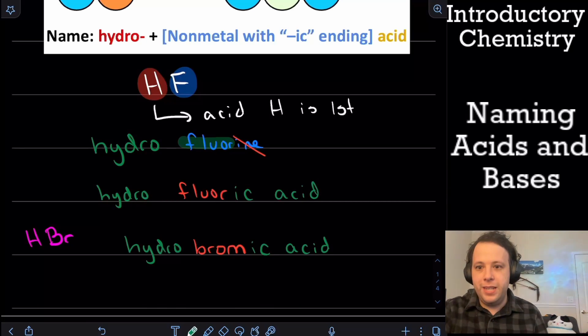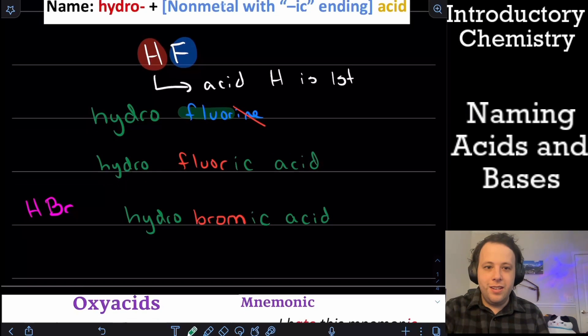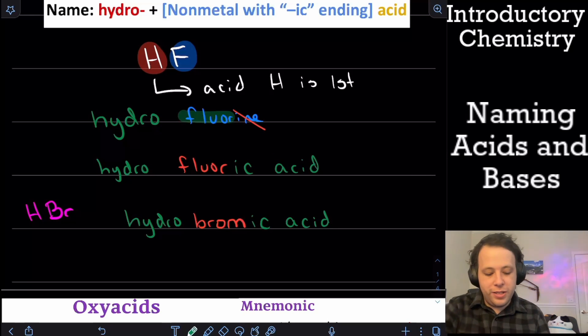So bromine, right? So bromic acid, so hydro bromic acid. Now, if we wanted to go the other way, we could do that too. Let's say if I gave you the following name, and I said we had hydrochloric acid, what would be the name here?